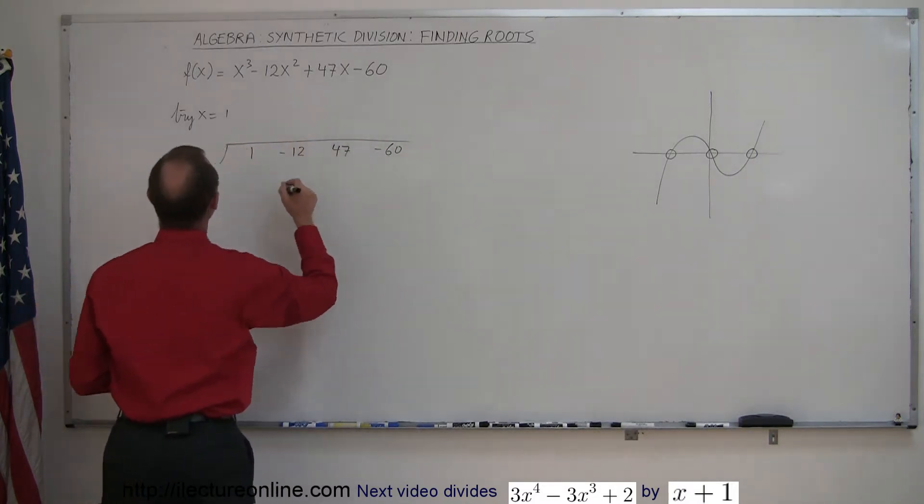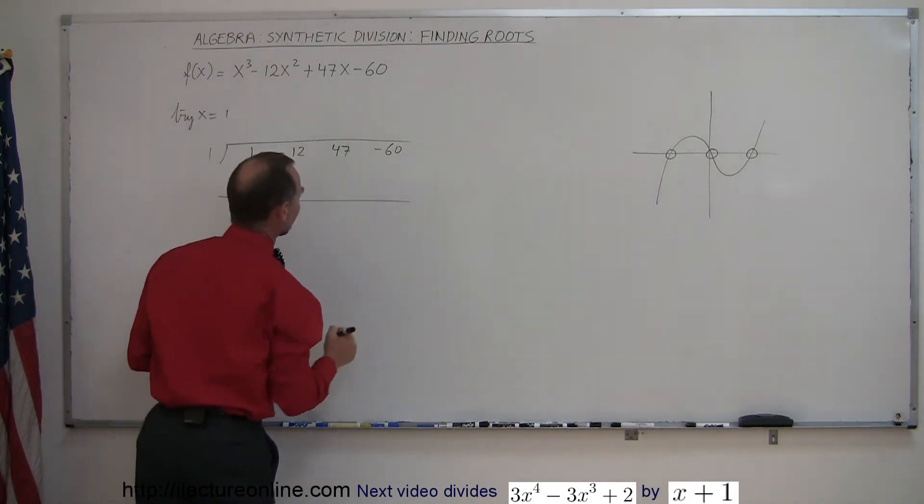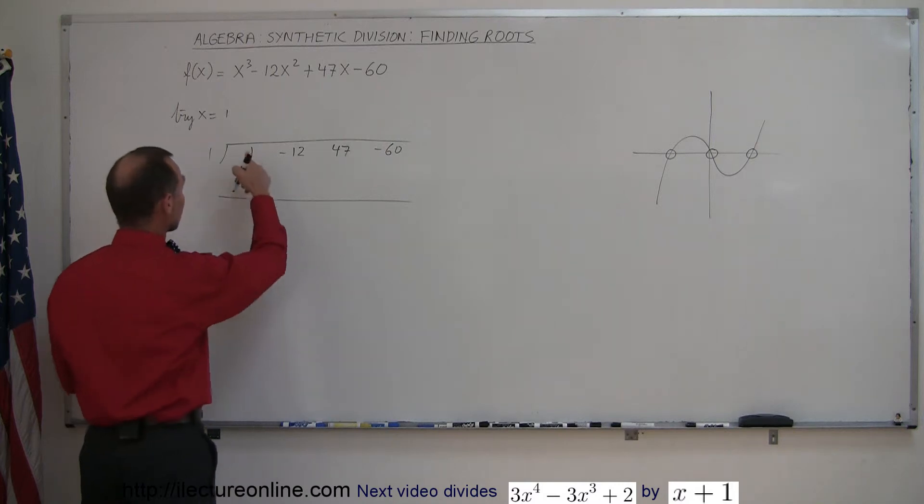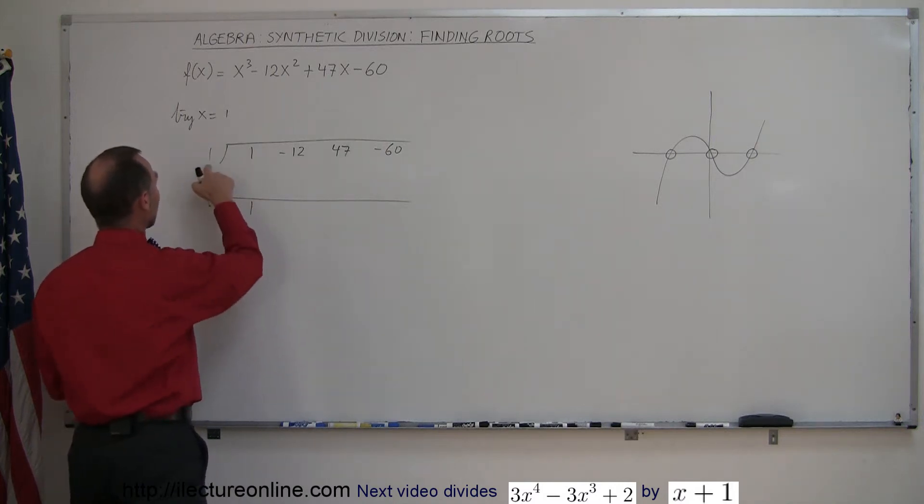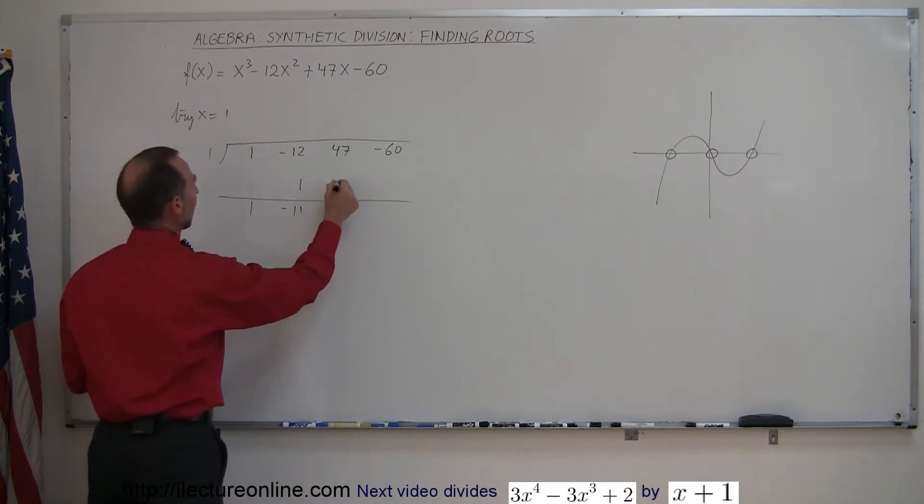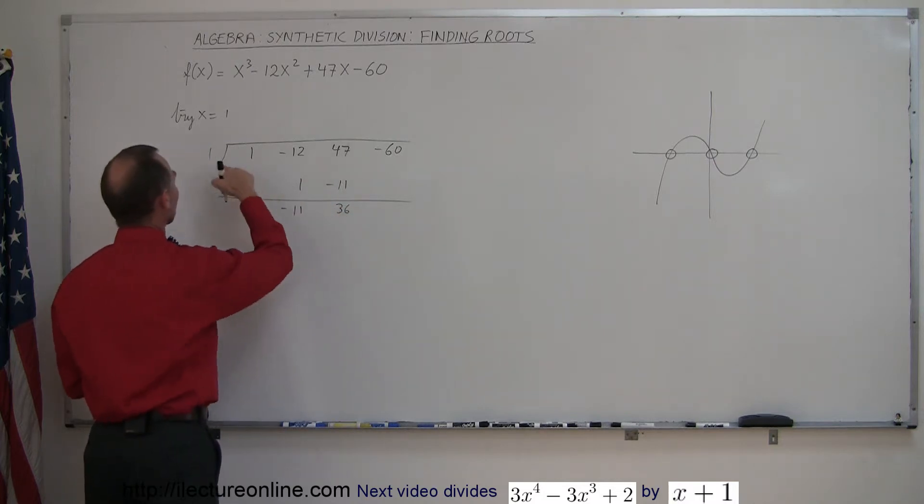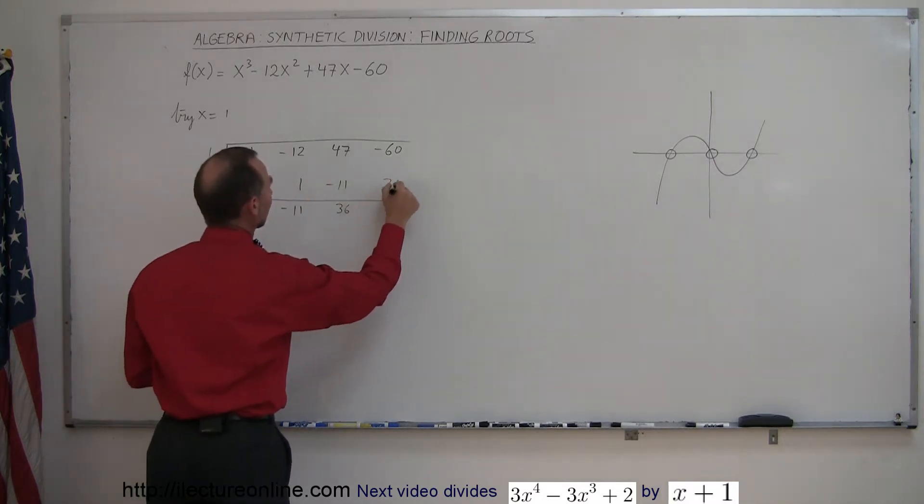Then we put our division symbol there, we put our presumed root, and a line over here. The first thing we do is drop the 1 down. Then we go 1 times 1 is 1. We add those two together, we get minus 11. Minus 11 times 1 is minus 11. Add those together, we get a positive 36. 36 times 1 is 36. Add those together, you get minus 24.